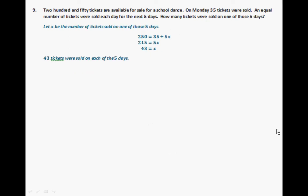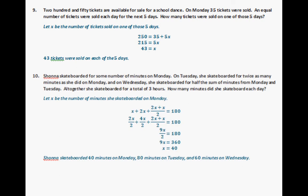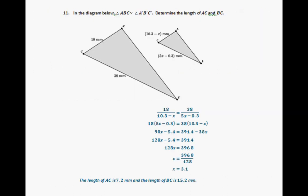For problem 9, 43 tickets were sold on each of the 5 days. For number 10, Shawna skateboarded 40 minutes on Monday, 80 minutes on Tuesday, and 60 minutes on Wednesday. For number 11, using our proportions, x equals 3.1, which means the length of AC is 7.2 millimeters and the length of BC is 15.2 millimeters.